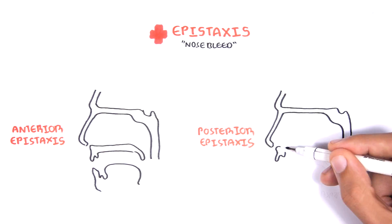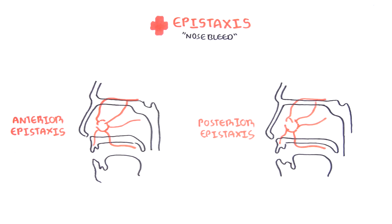Nosebleeds are also called epistaxis. There can be anterior nosebleeds or posterior nosebleeds, so anterior epistaxis or posterior epistaxis. Posterior nosebleeds are more dangerous. With anterior nosebleeds, blood essentially runs anteriorly, so comes out of the nose.